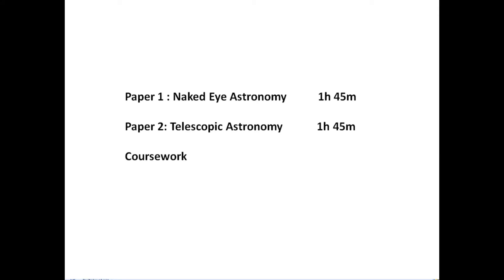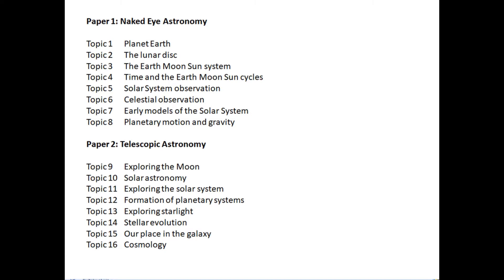There are two papers. Paper one is naked eye astronomy and Paper two is telescopic astronomy. Both of them are an hour and 45 minutes, and there's also coursework — you have to do two coursework tasks. Each paper covers eight topics: Paper one is topics one to eight, and Paper two is topics nine to sixteen.